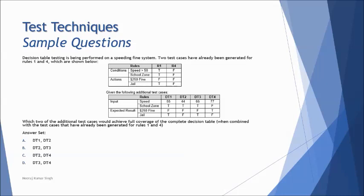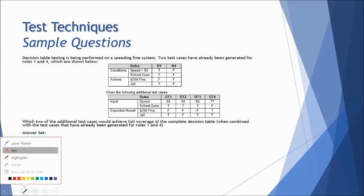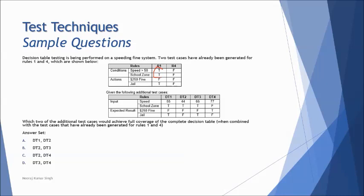The next question is on the decision table. So sometimes they give you the entire table and ask you certain cases to be given, and then they ask you the query that what happens with the ongoing activities. But in this case, they have given you the two test cases as of now. Decision table testing is being formed on a speeding fine system. Two test cases have been already generated for rule one and four. Given the following additional test cases, which two of the additional test cases would achieve the full coverage of the complete decision table when combined with the test cases that have already been generated. So if you concentrate in decision table, when you have two conditions, we generally have four combinations possible.